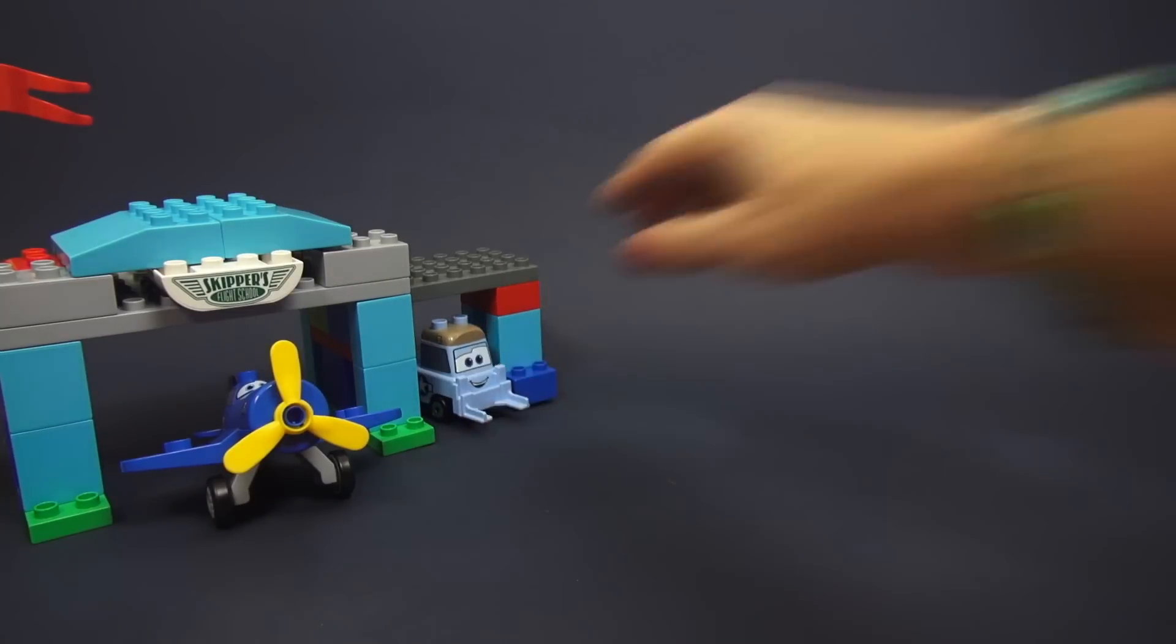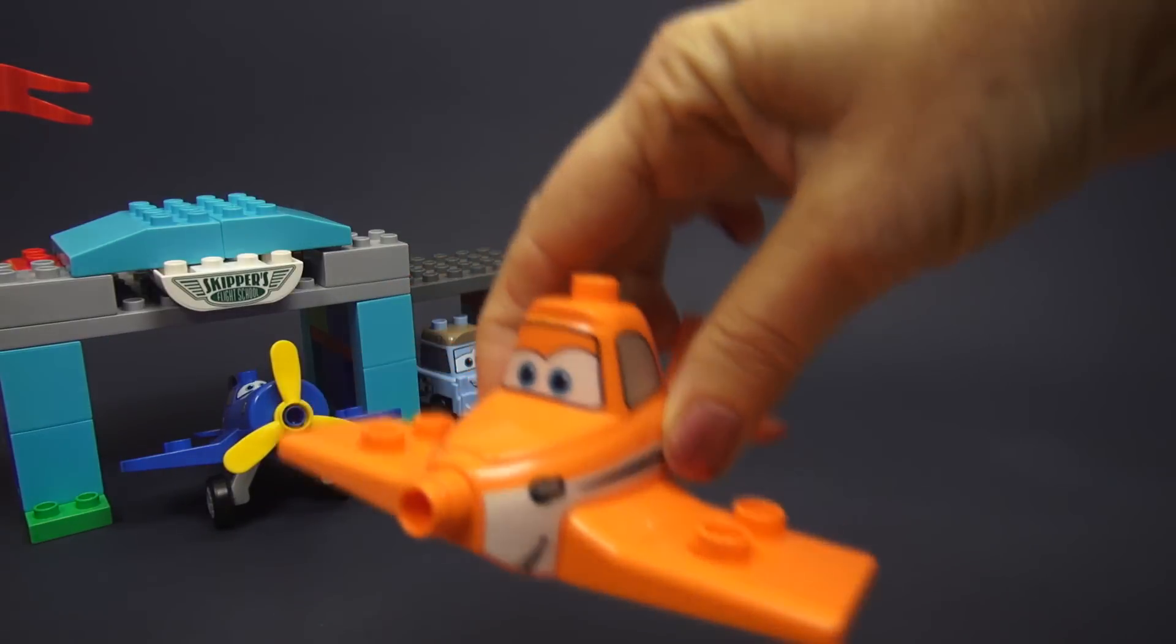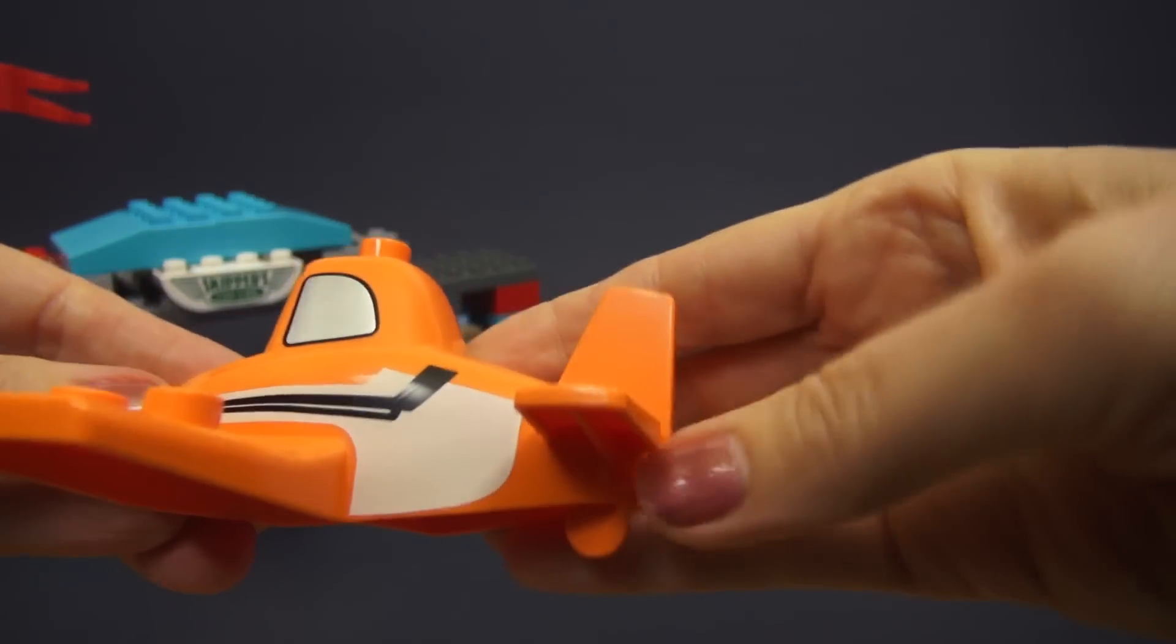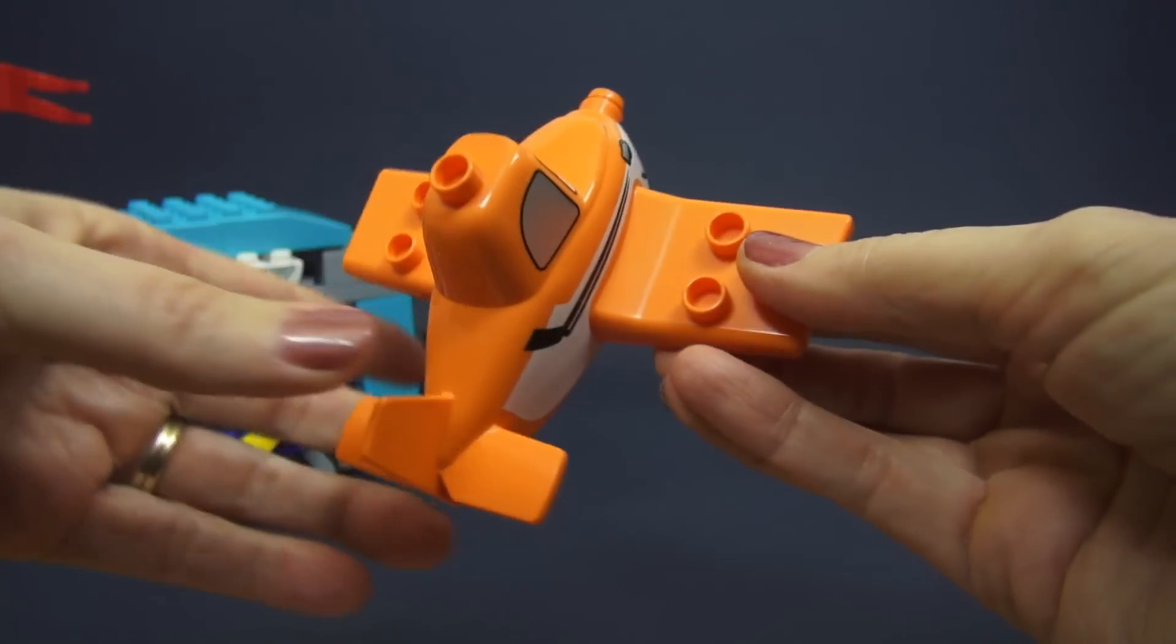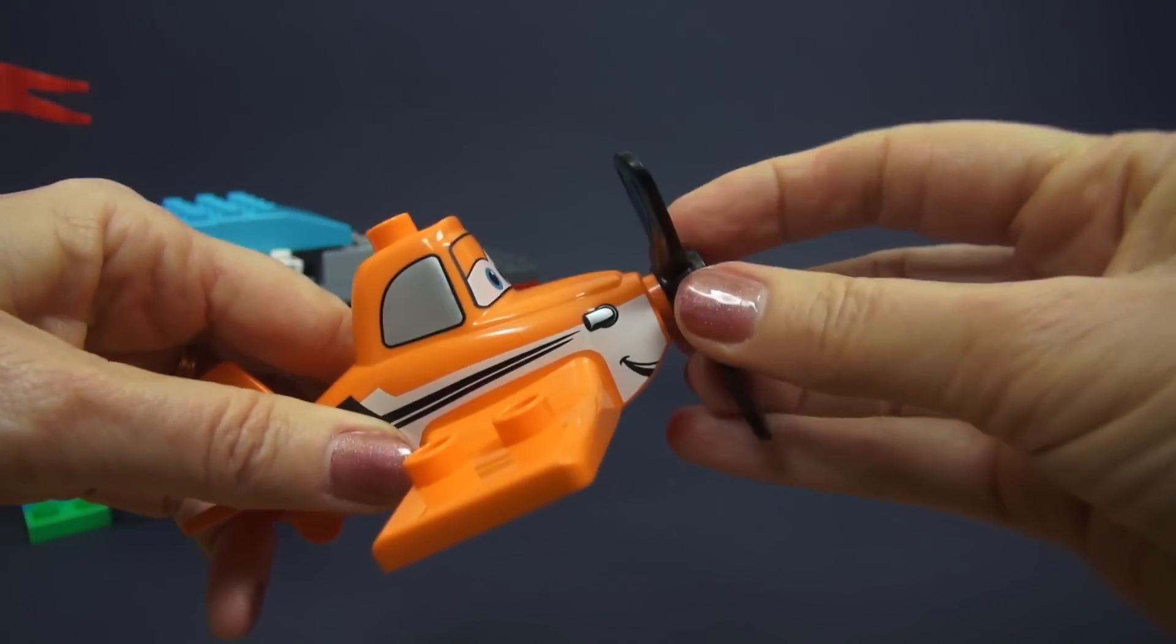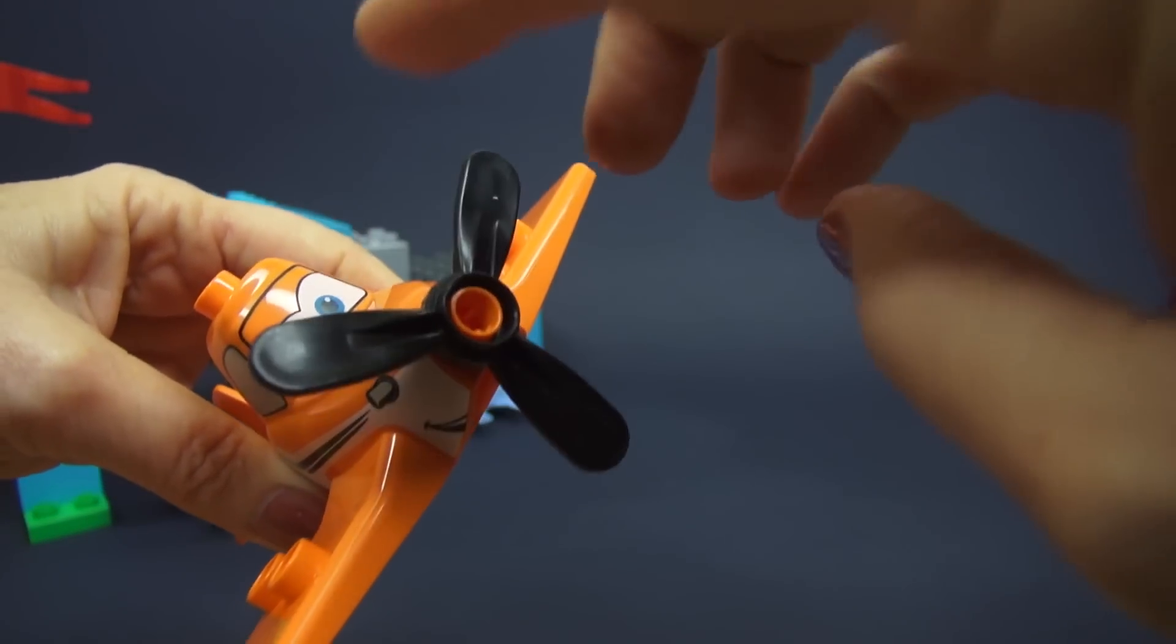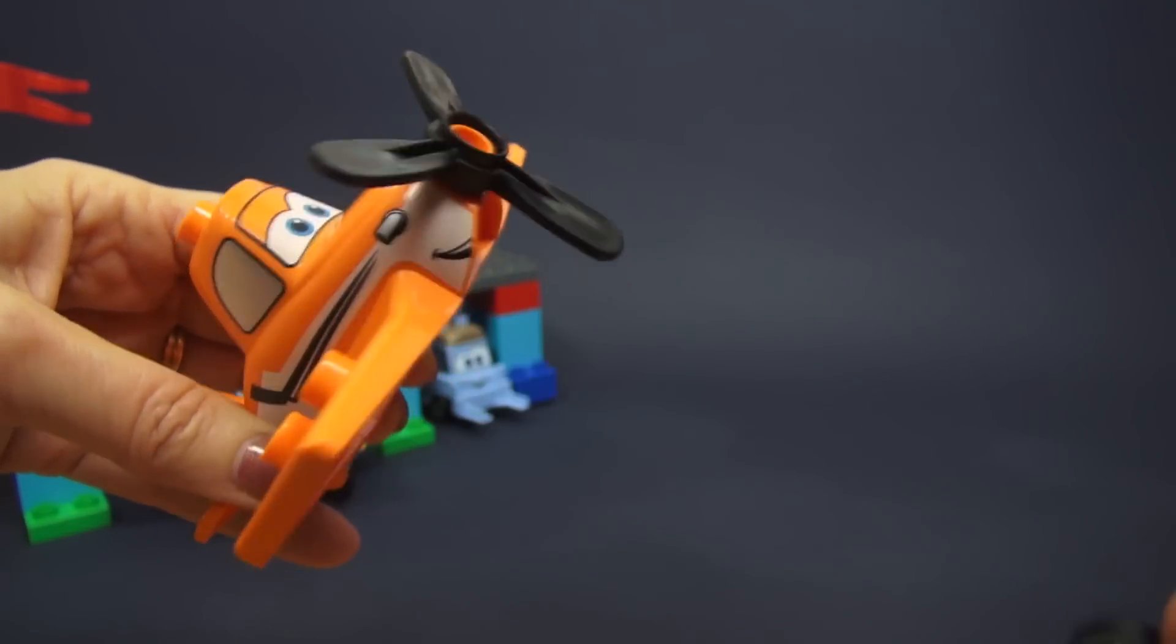Now our star is Dusty and he's gonna be a great racer, but first he has to learn some tricks of the trade from our friend Skipper. So just like with Skipper, he has a propeller, snaps on and show us what you got there, good job Dusty.